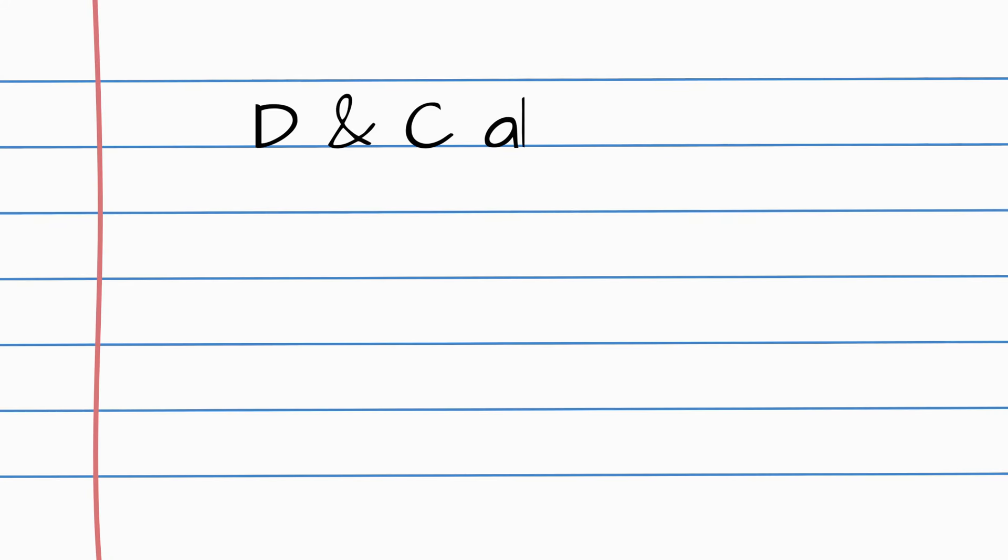In this video, we will discuss D&C abortions. This stands for dilation and curettage and can be done from 5 to 13 weeks.